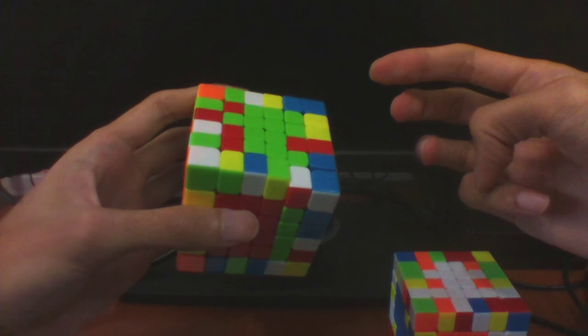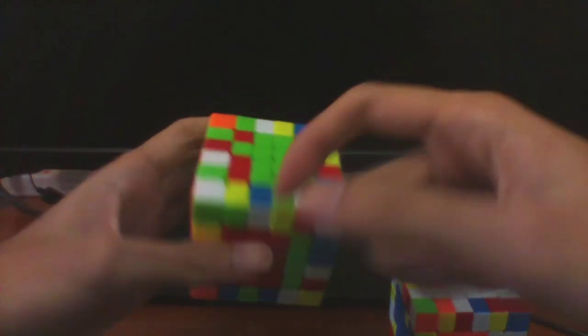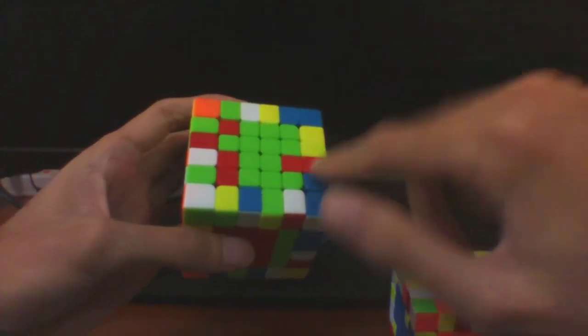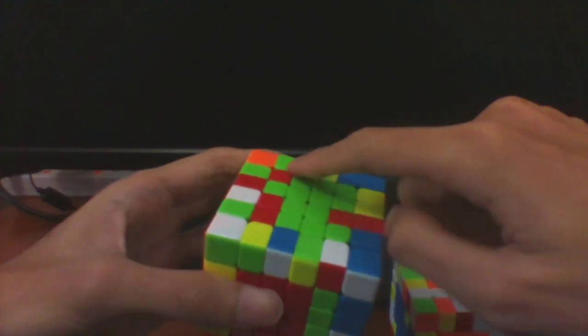For this case it's pretty easy to recognize - you have three pieces and the last piece is opposite of the partial bar.